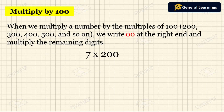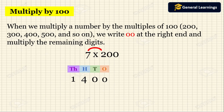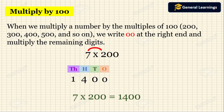Now we will see one example. They have given 7 into 200. Since 200 has two zeros, write two zeros at the extreme end, that is in the ones place and tens place. Then multiply the remaining number: 7 by 2. So 7 twos are 14. So 4 should be written in the hundreds place and 1 should be written in the thousands place. So 7 into 200 we get 1400.